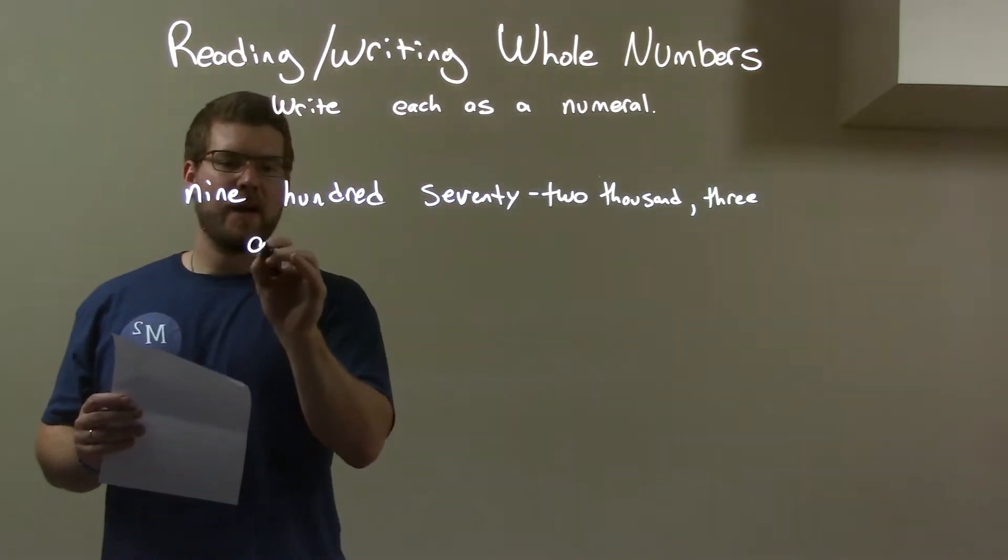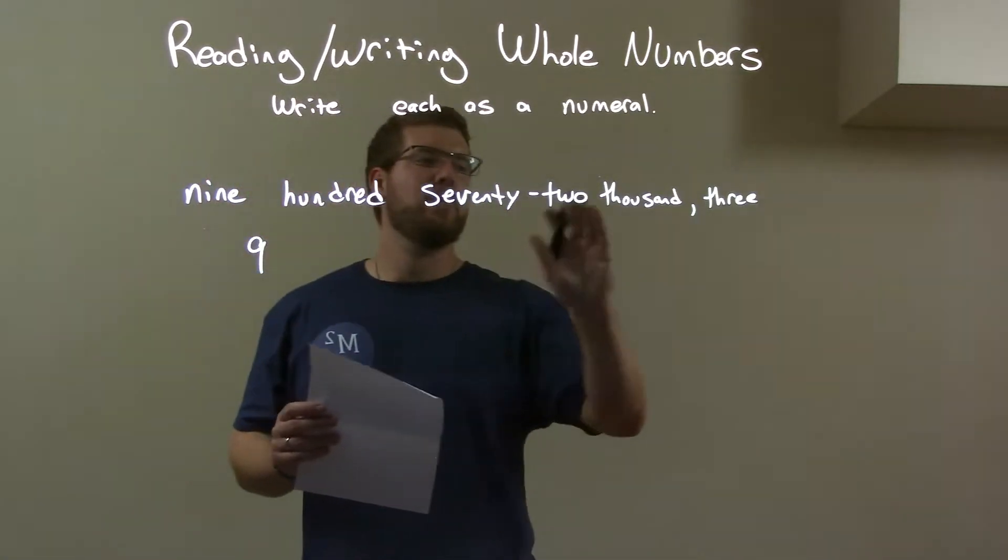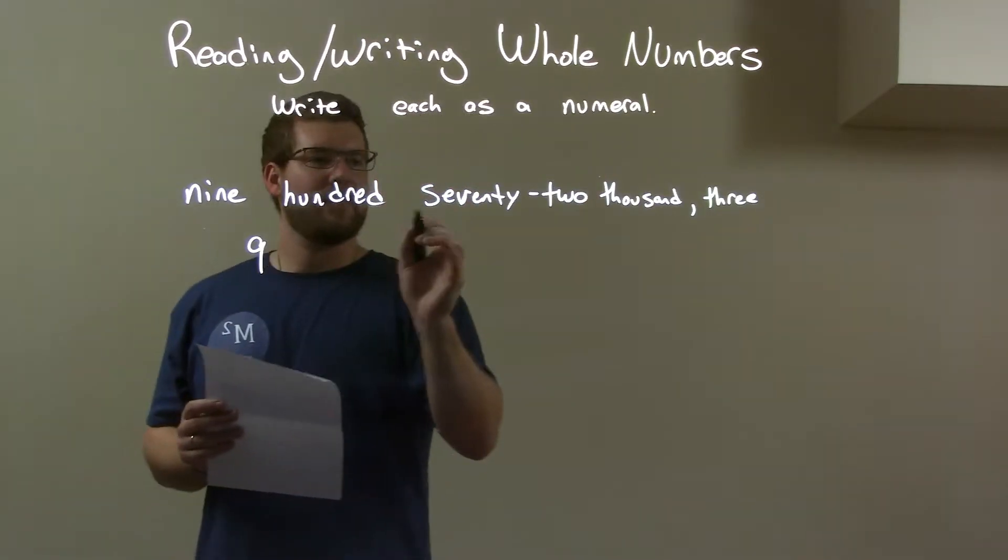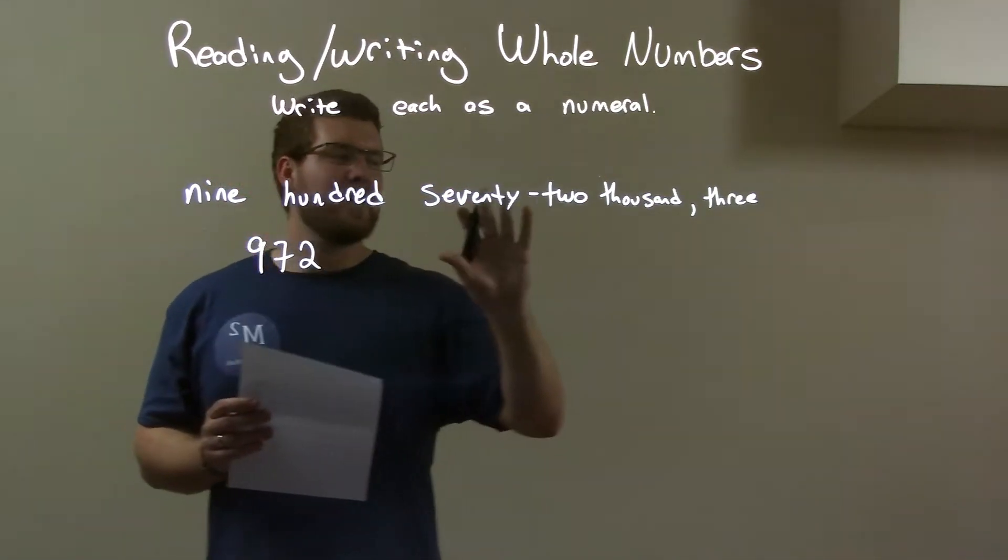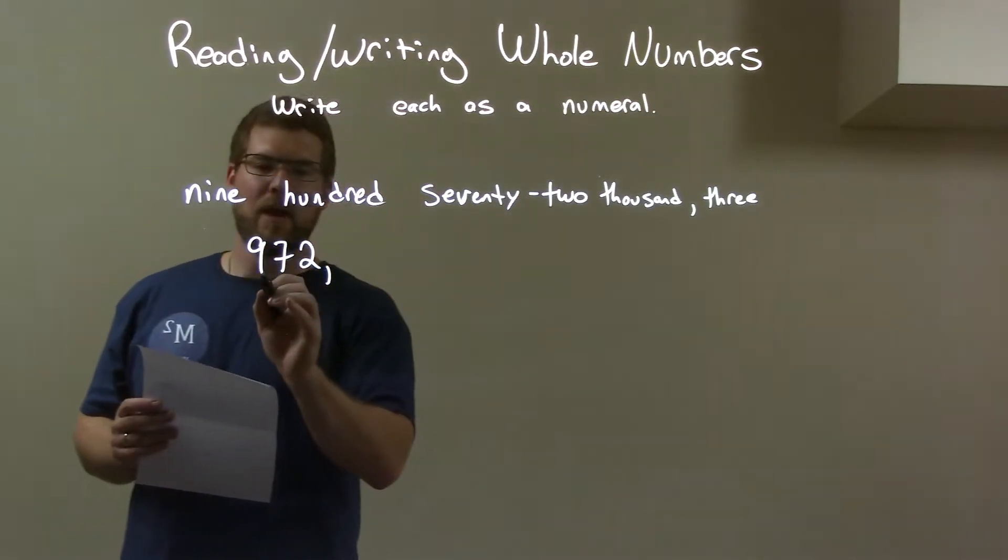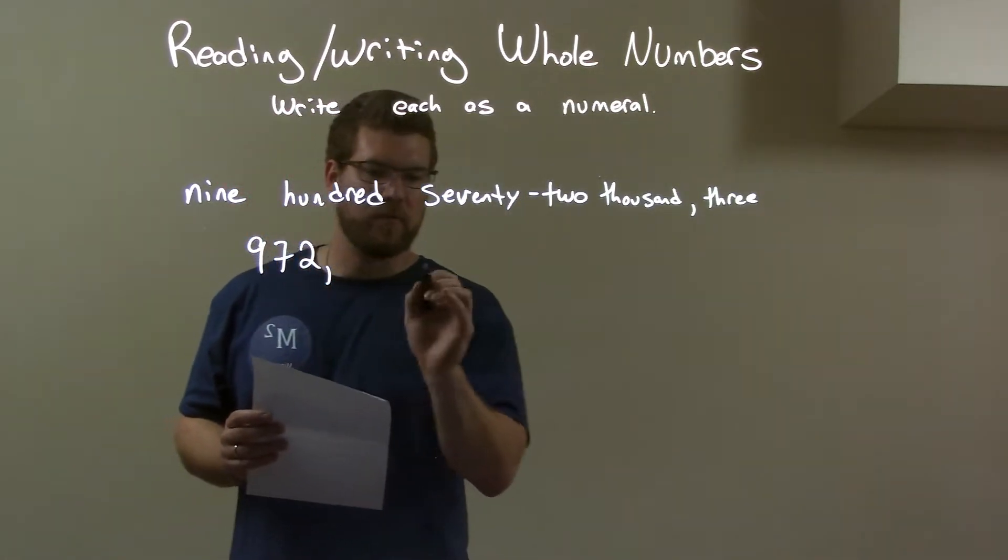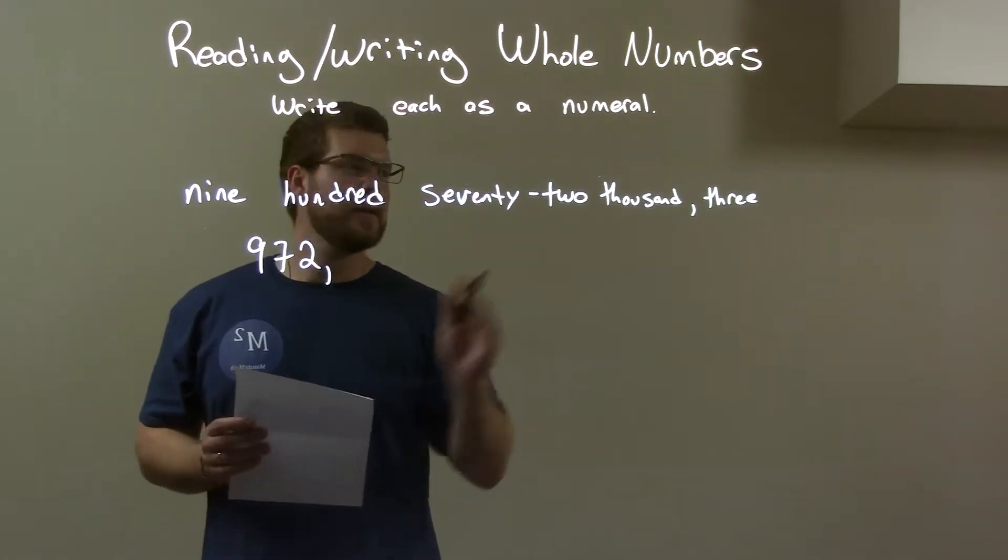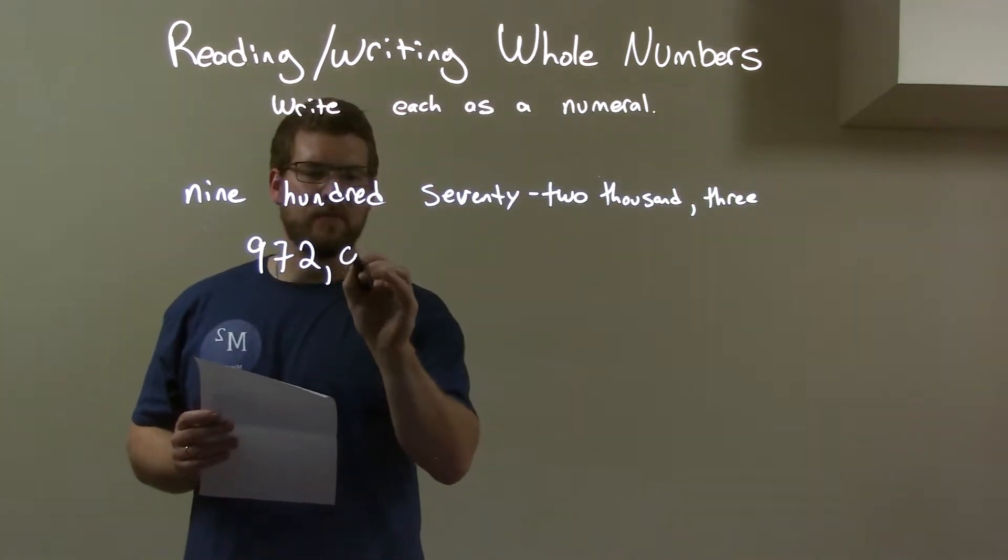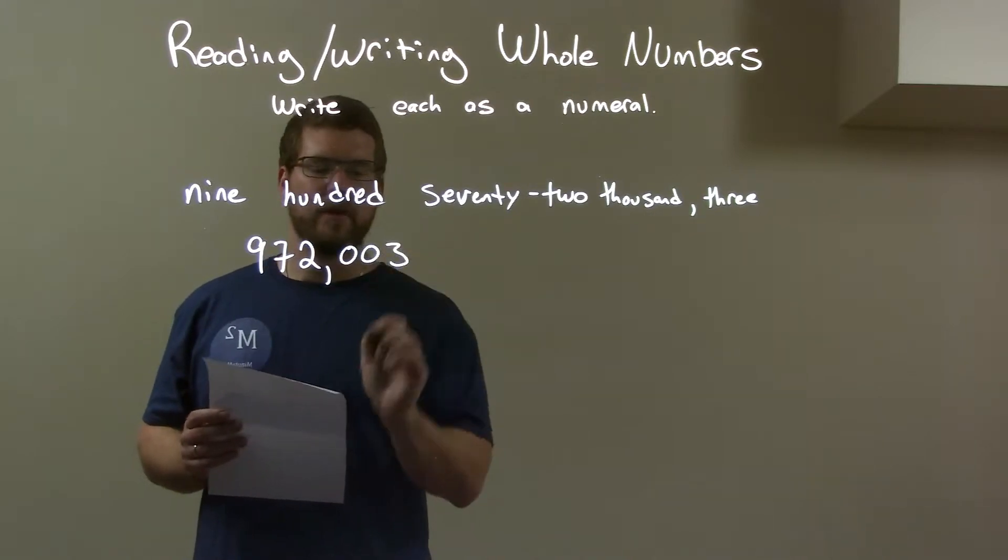972,000. So we have the 900s. I'm going to put the 9 down, but it's 972,000. So we have 72 afterwards, but that's in the thousands. So now we have 972,000 with three spaces afterwards. So we got 972,000, and then we have just a three. So we have two zeros and then three.